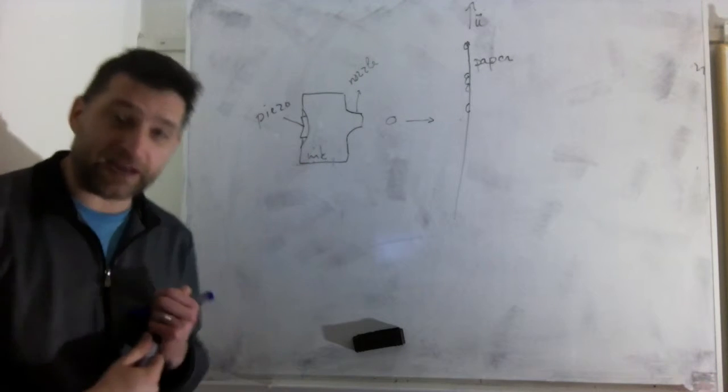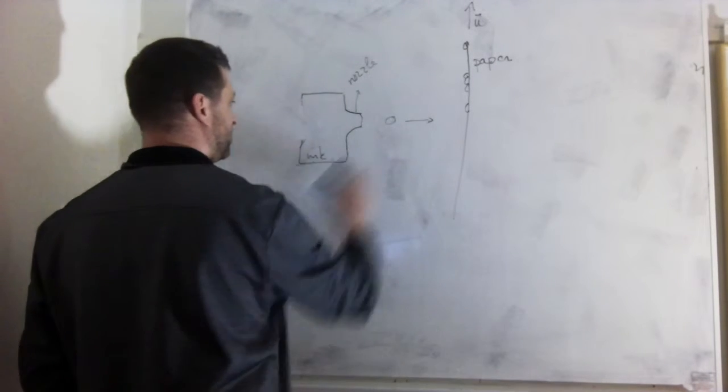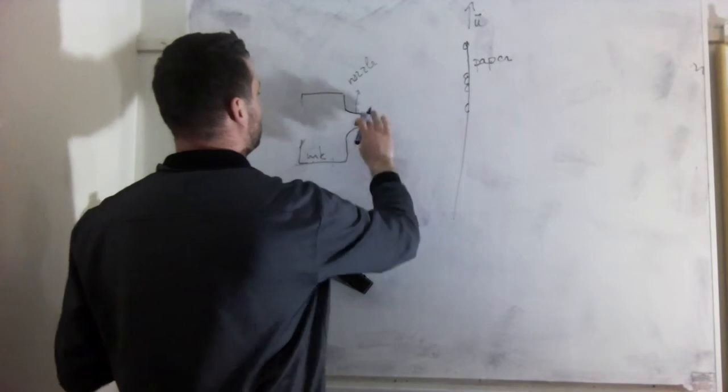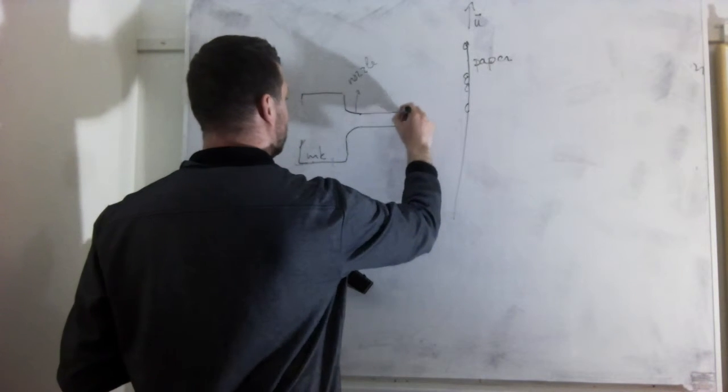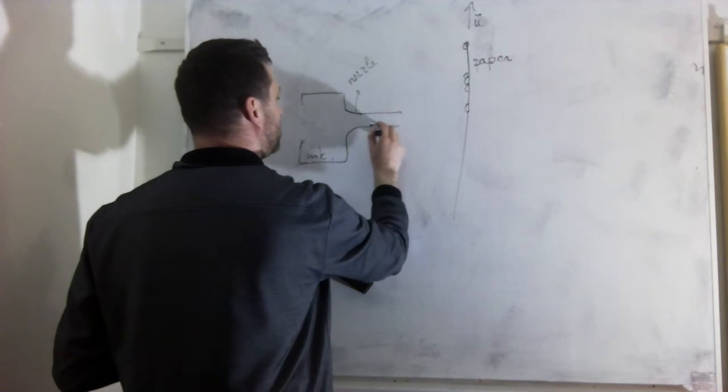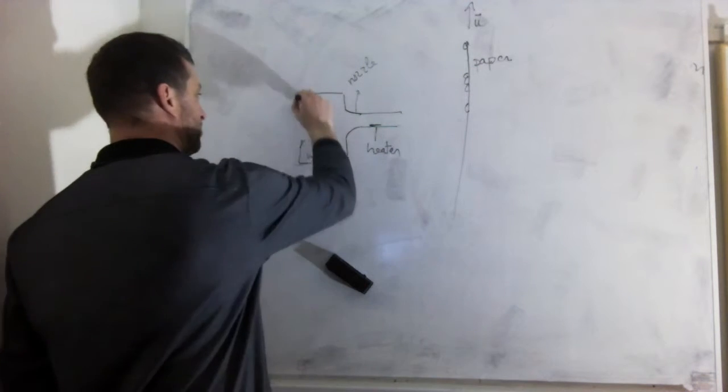And the third main way of doing it is also drop-on-demand. Instead of having a piezo element here, we're going to have a nozzle that's slightly longer with an opening here. And in that nozzle, we're going to put a heater element. This is called a bubble jet printer.